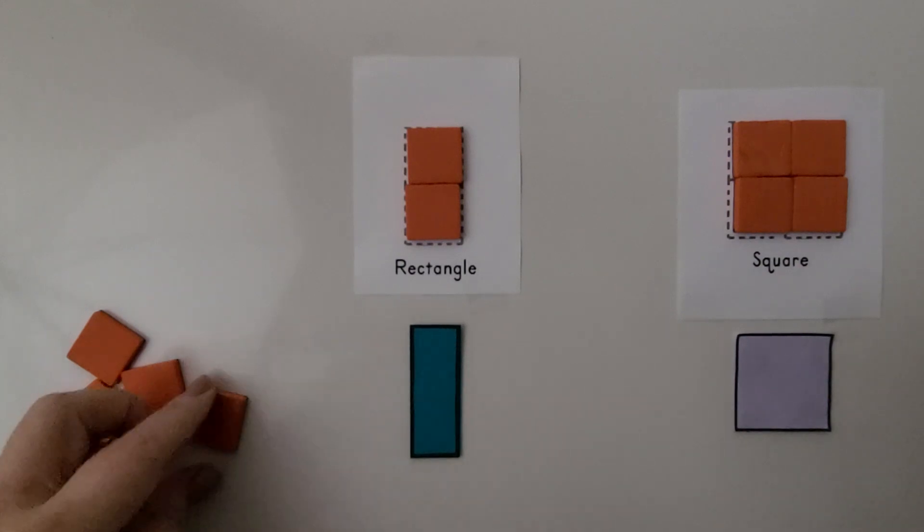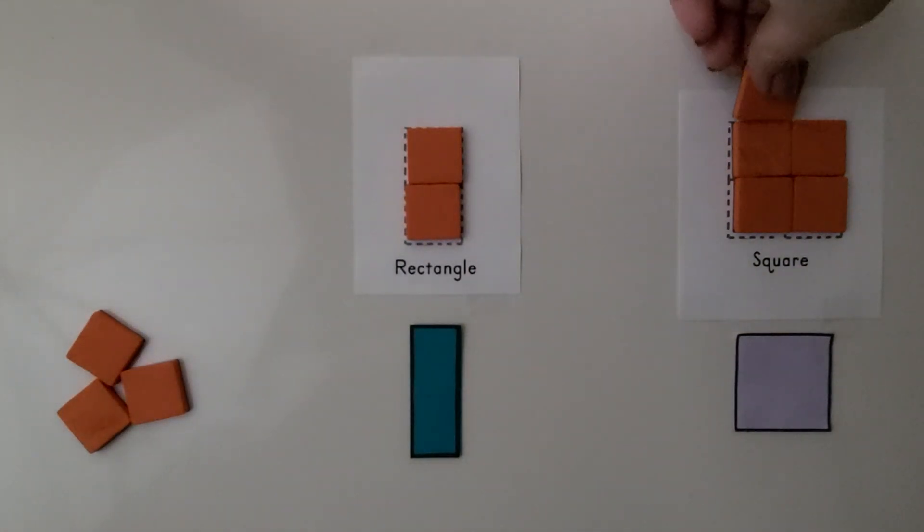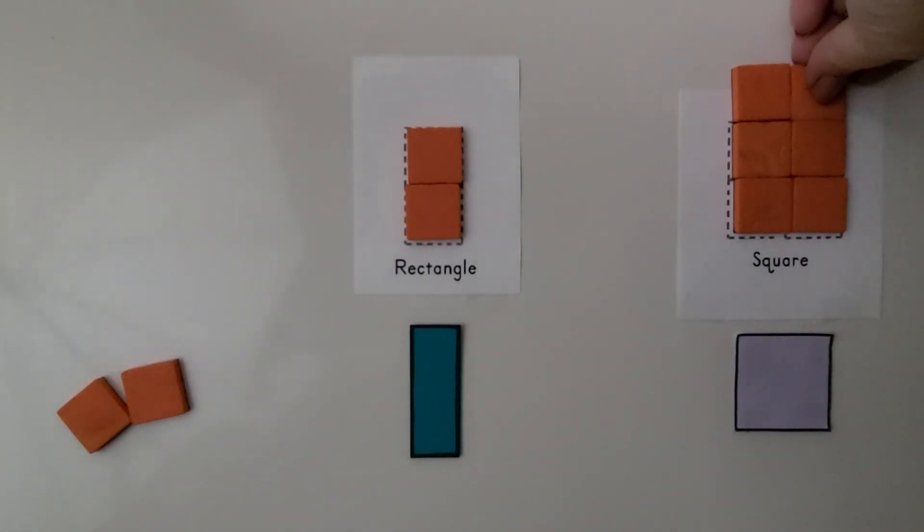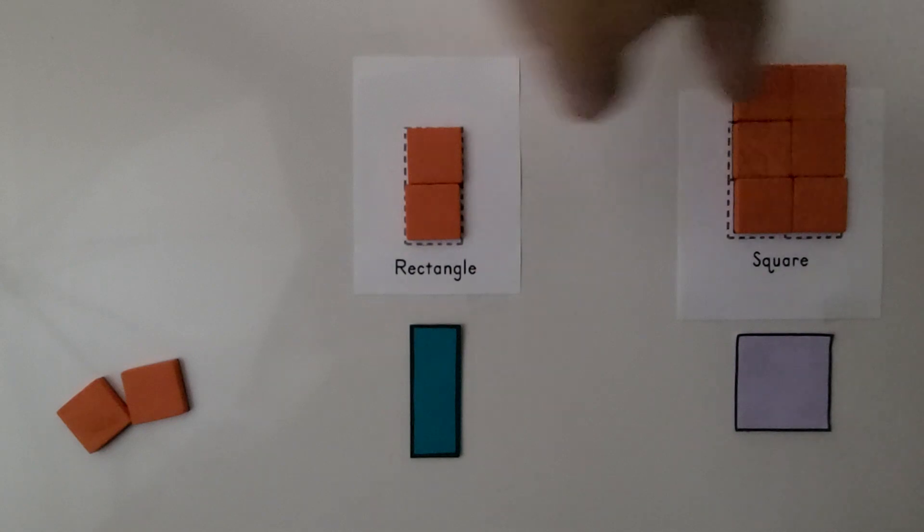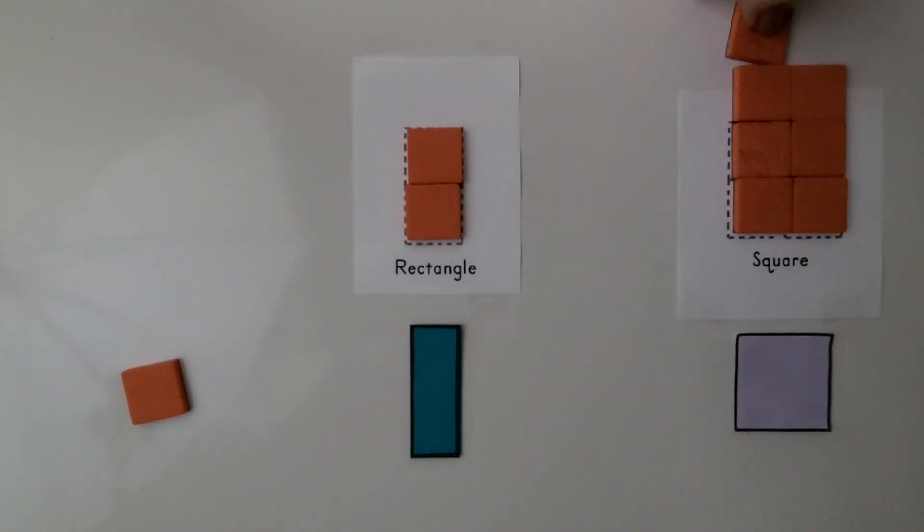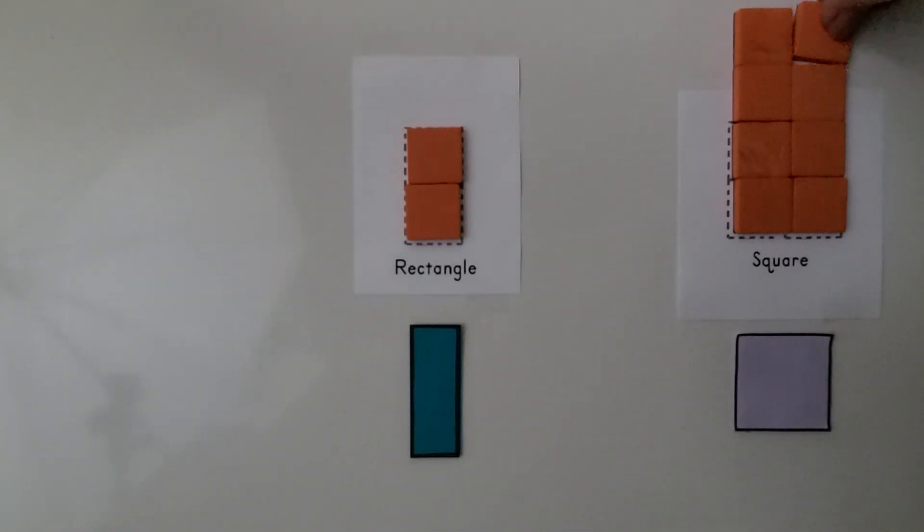And we can put six squares together to make a rectangle. If we went like this, we have six squares. Now we have a rectangle like this. And we could even put more squares on and make a bigger rectangle. We could keep going.